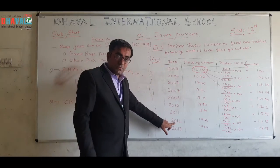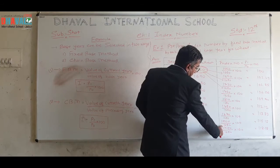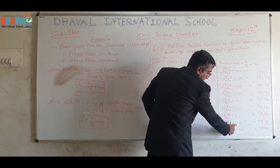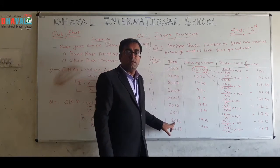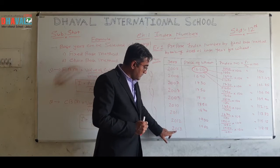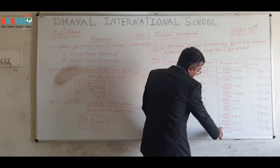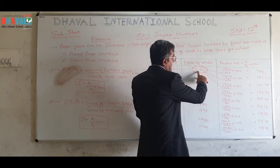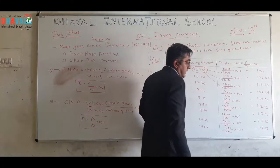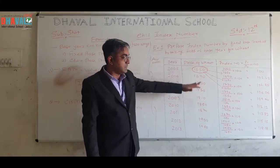For year 2011: price of current year 1870, divided by price of base year 1650, into 100. Answer: 113.33. For year 2012: price of current year 1900, divided by price of base year 1650, into 100. Answer: 115.15. For year 2013: price of current year 1950, divided by price of base year 1650, into 100. Answer: 118.15. The sum is complete.